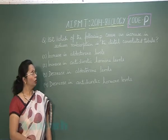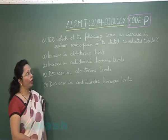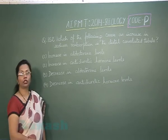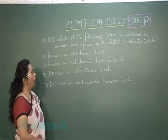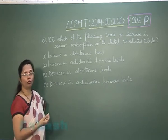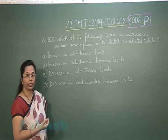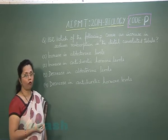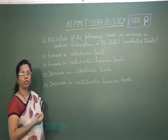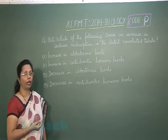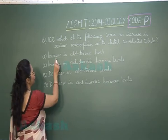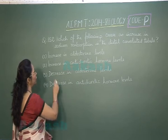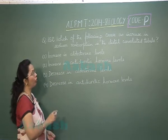Question 152: Which of the following causes an increase in sodium reabsorption in the distal convoluted tubule? The DCT undergoes facultative reabsorption of water and sodium in the presence of hormones. Sodium reabsorption depends on the level of aldosterone. The first choice says increase in aldosterone levels, and another mentions increase in anti-diuretic hormone levels.